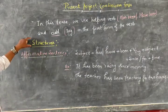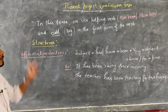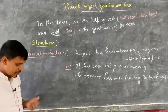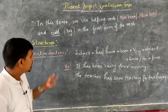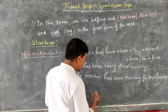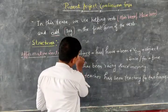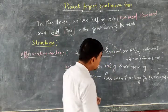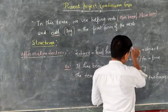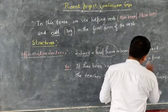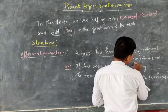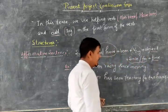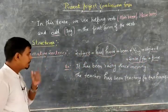Now we will discuss the structure of the present perfect continuous tense. So very first, for affirmative sentences: in the affirmative sentence, we first mention the subject, then the helping verb — 'has been' or 'have been' — then the '-ing' form of the verb, then the object, and we mention 'since' or 'for' followed by the time.